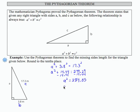I can take the square root of both sides, which will turn a squared into a, and 284.85 into the square root of 284.85.